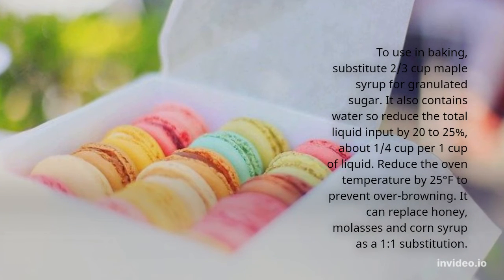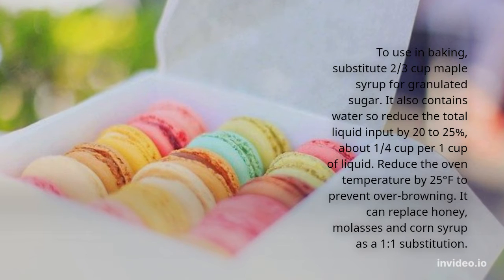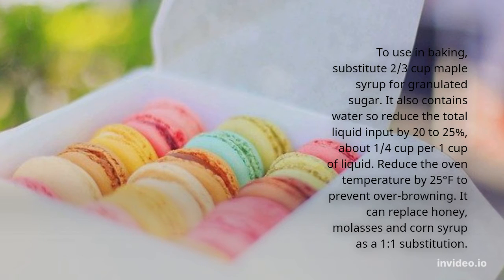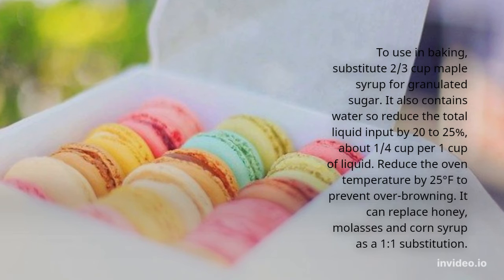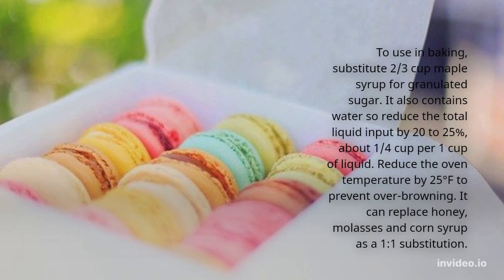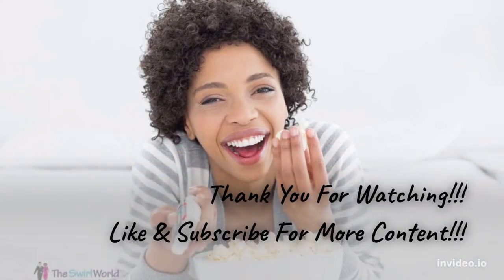To use in baking, substitute two-thirds cup maple syrup for one cup of granulated sugar. It also contains water, so reduce the total liquid input by 20 to 25 percent — about one quarter cup for one cup of liquid. Reduce the oven temperature by 25 degrees Fahrenheit to prevent over-browning. It can replace honey, molasses, and corn syrup as a one-to-one substitution. Thank you for watching.